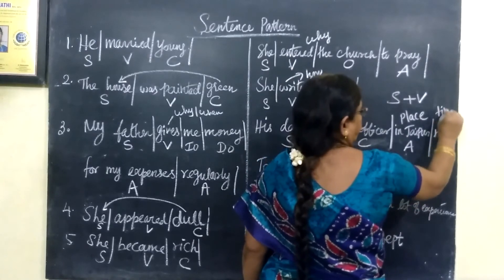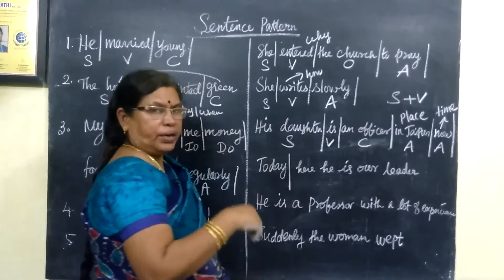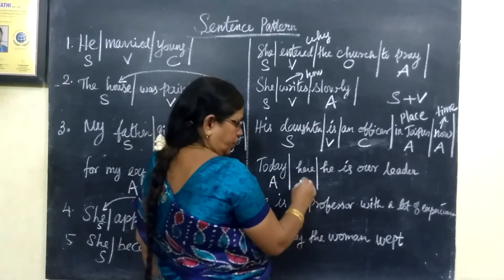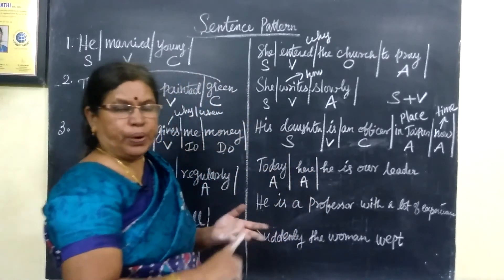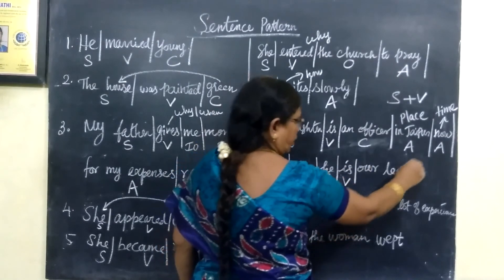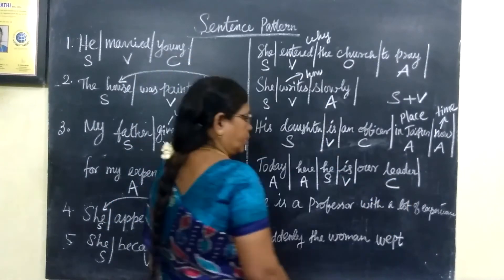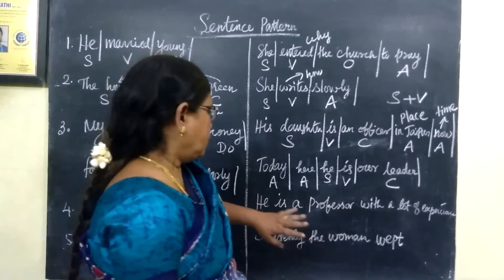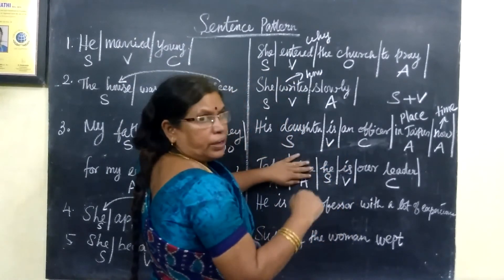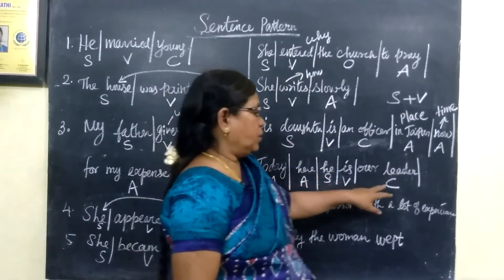Time and place are adjuncts. 'Today' refers to time — that is an adjunct. Time and place are adjuncts. Now: 'He is our leader' — 'he' is the subject, 'is' is the verb, and 'our leader' is the complement. 'Today' and 'here' are not complements — they are adjuncts. 'He is what?' — 'He is our leader.' So 'our leader' is in the complement position.